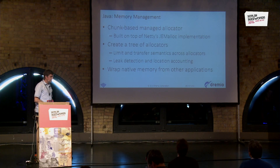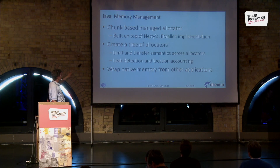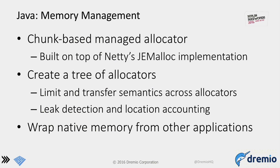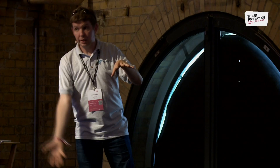For in-memory processing, Arrow comes with a memory allocator based on Netty and a tree-of-allocators concept to handle quotas and memory provisioning. During query execution you want to understand which operator is using how much memory and limit it. For example, a hash join and another operator both use memory, and you may want the join to be able to spill data to disk.